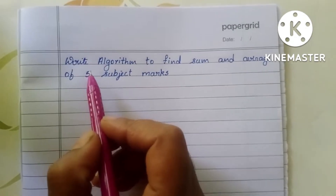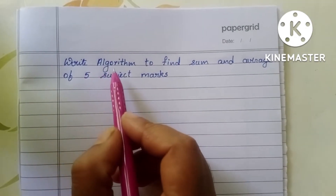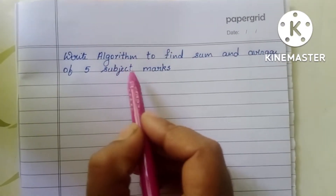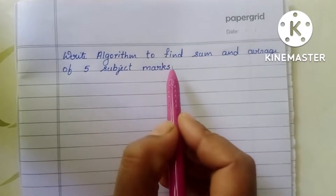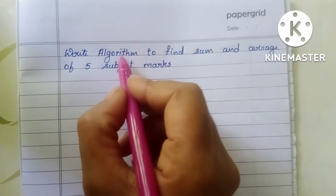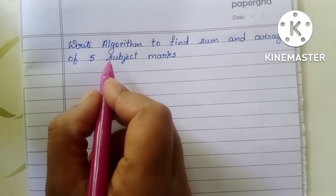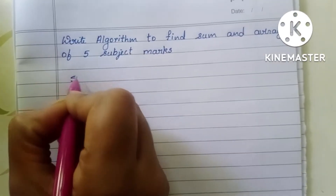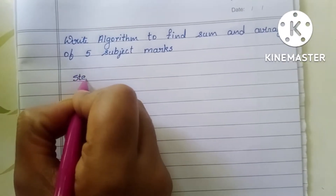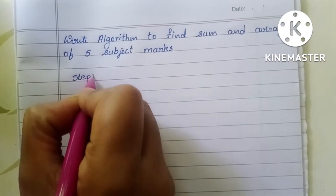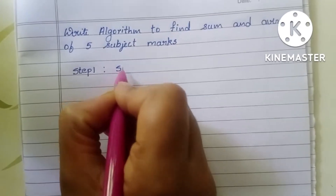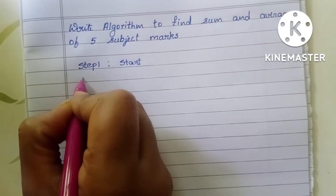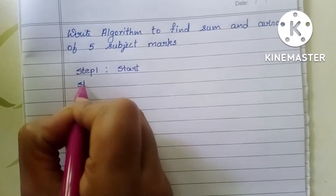In this video we're going to learn how to write an algorithm to find the sum and average of five subject marks. An algorithm is a step-by-step process to solve a problem. Step one is always the start statement.